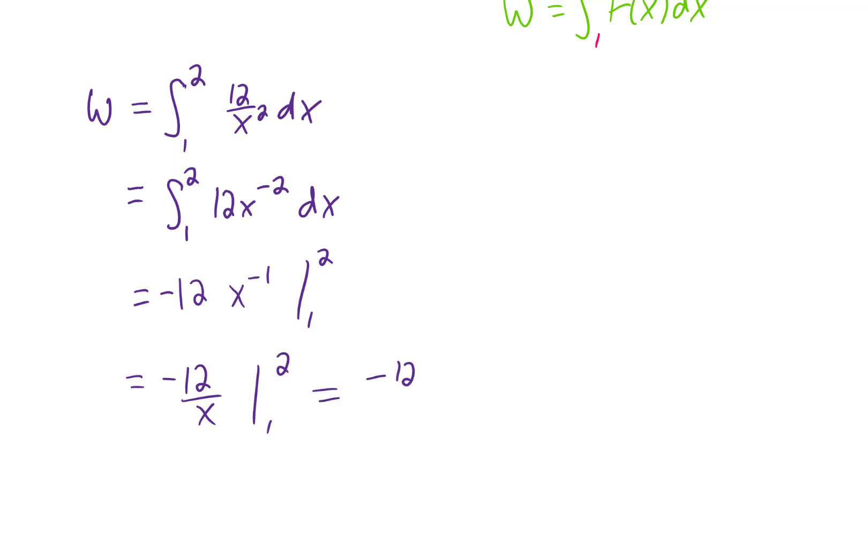Now when plugging in our upper and lower limits of integration we get negative 6 plus 12 which is the final answer of 6 and this would be units of work which might be joules or it could be something like foot pounds depending on the units given in the problem.